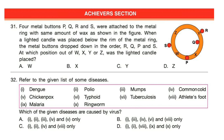Question 32: Refer to the given list of some diseases. Which of the following diseases are caused by a virus? Correct answer is option A — Dengue, Polio, Mumps, Common Cold and Chickenpox. These five diseases are caused by viruses.